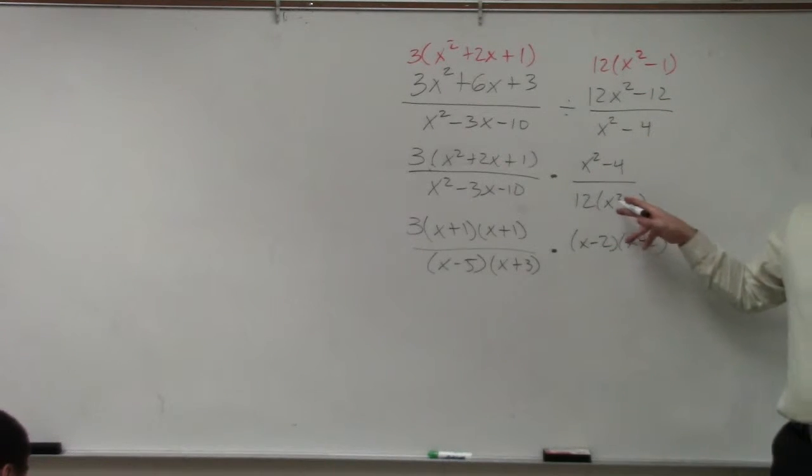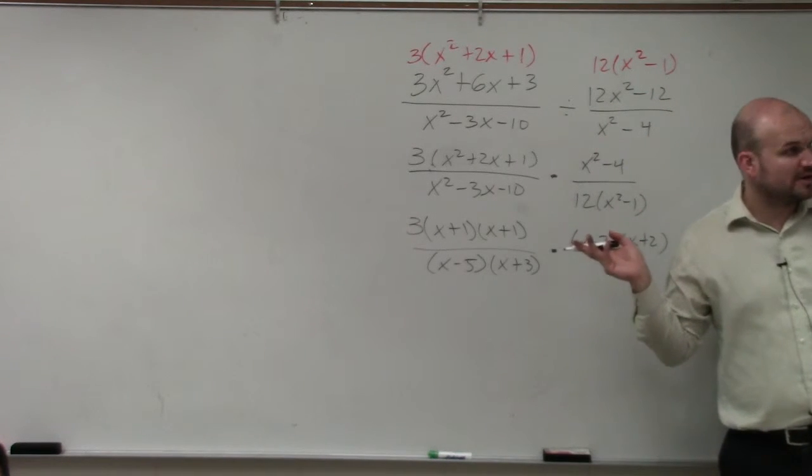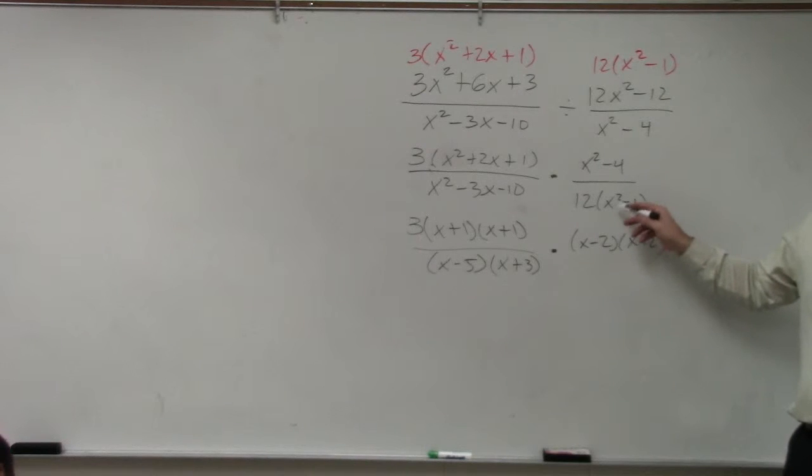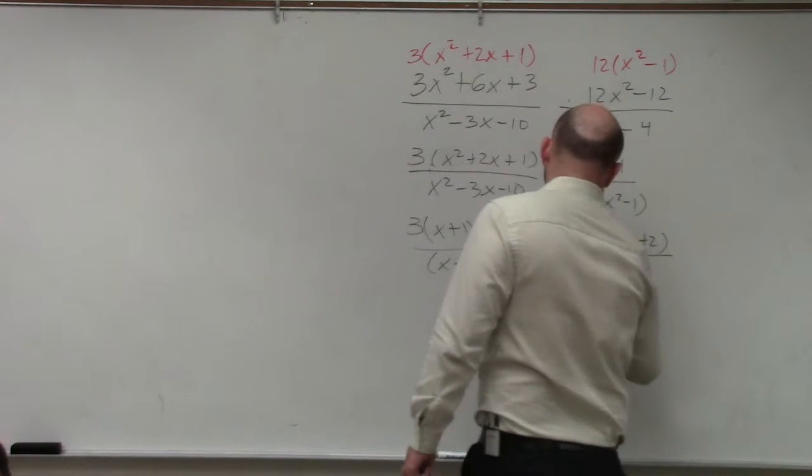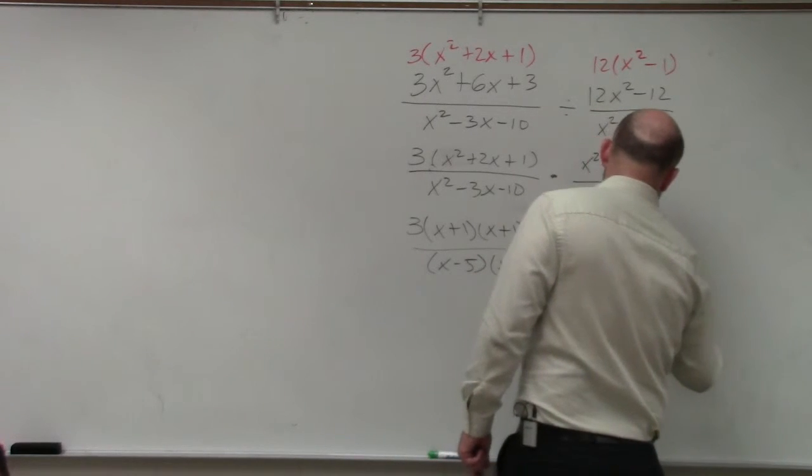And then over here, x squared minus 1. Again, that's a difference of two squares. x squared is a squared term, and negative 1 is a squared term. So I have 12x minus 1 times x plus 1.